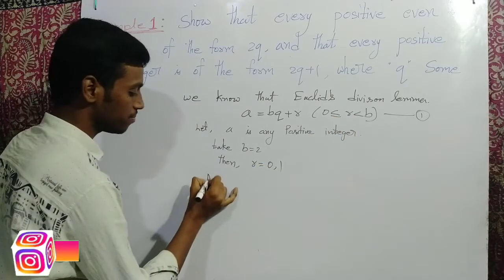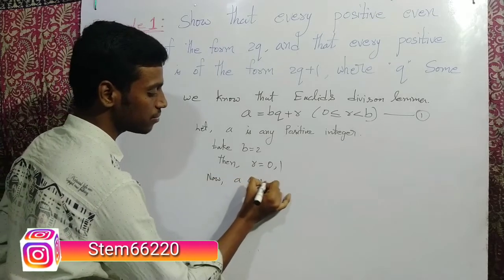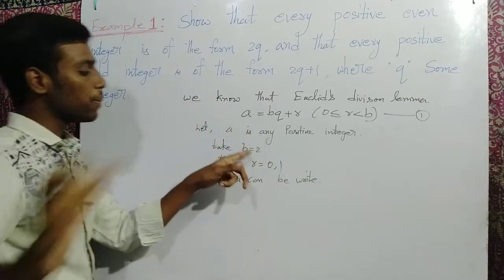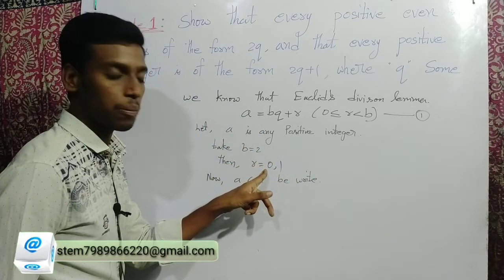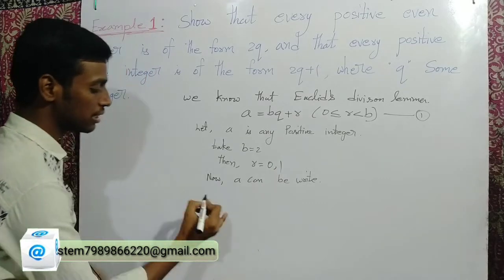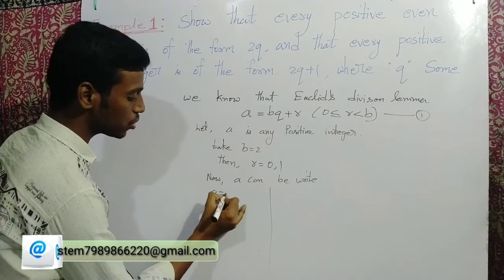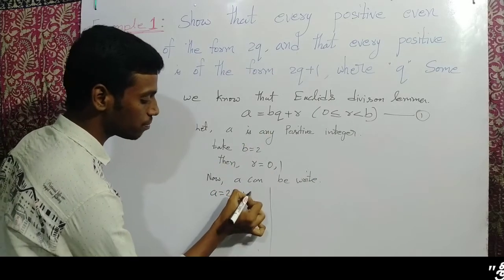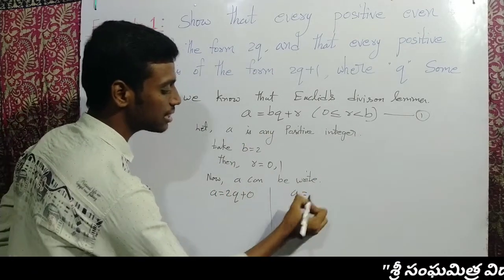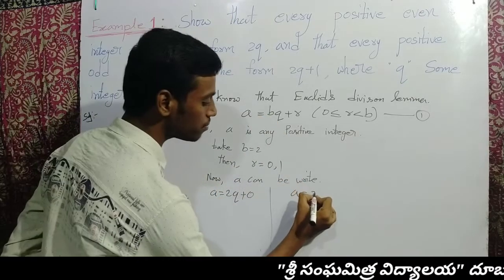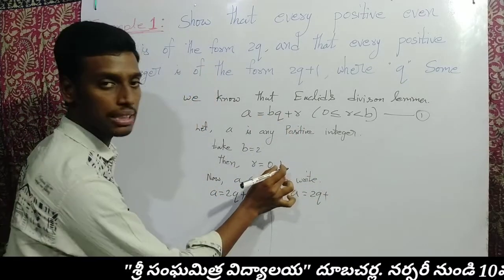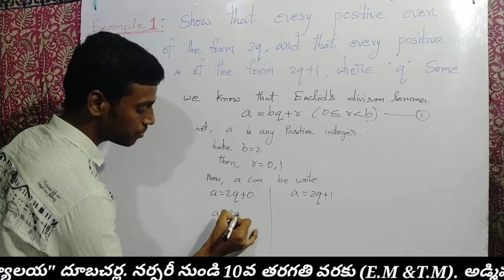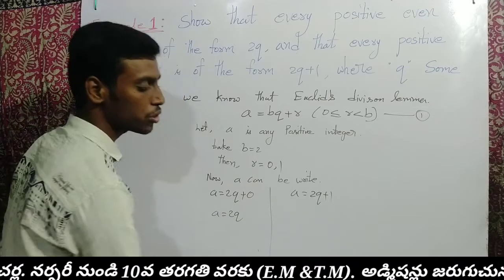Now, a can be written in two types. Putting b equal to 2 and r equal to 0: a is equal to 2q plus 0, that is a equals 2q. Next condition: putting r equal to 1, a is equal to 2q plus 1.